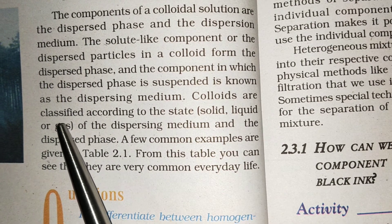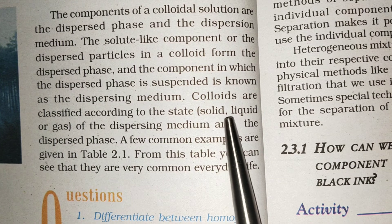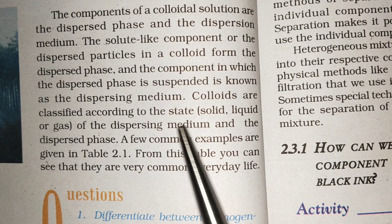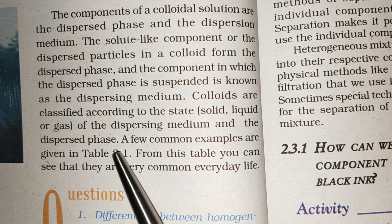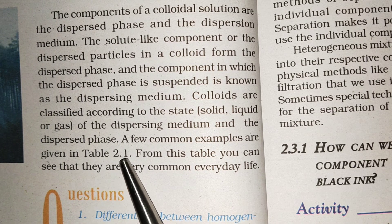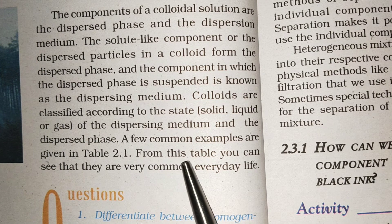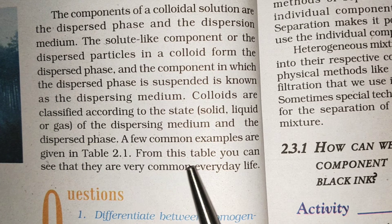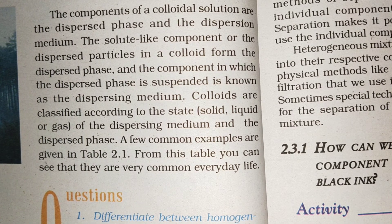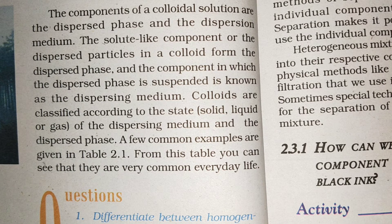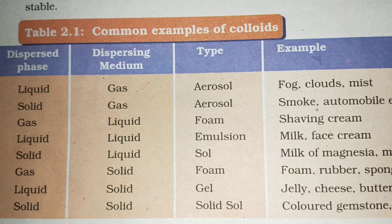Colloids are classified according to the state — that is, solid, liquid, or gas — of the dispersing medium and the dispersed phase. A few common examples are given in Table 2.1. From this table, you can see many common everyday examples of colloids.